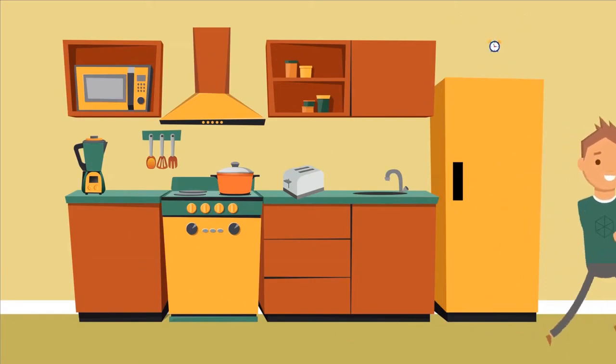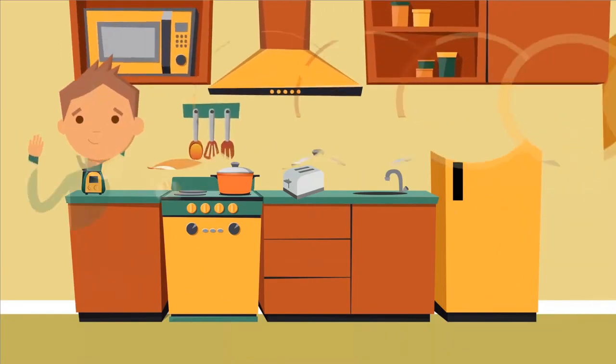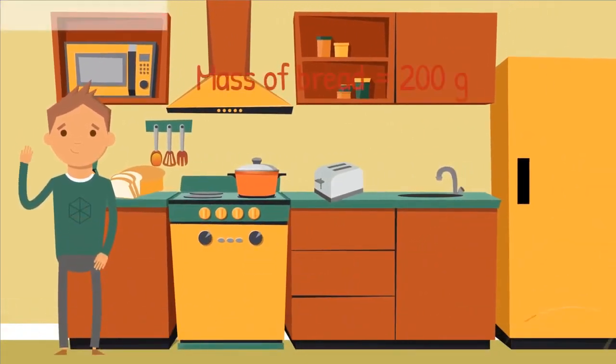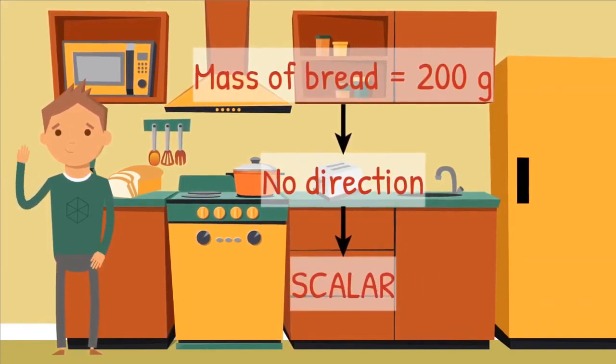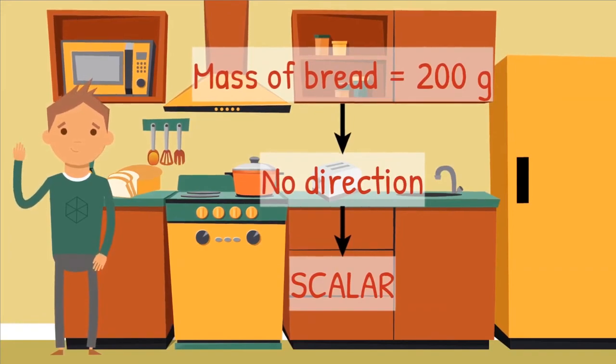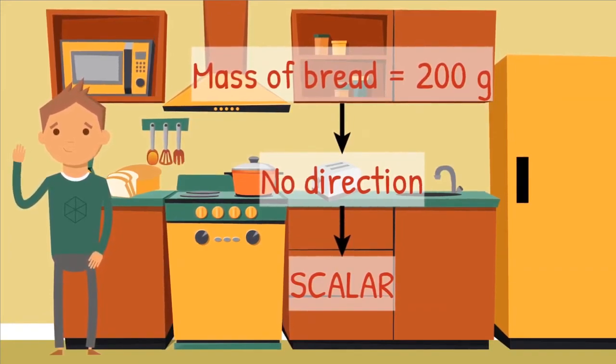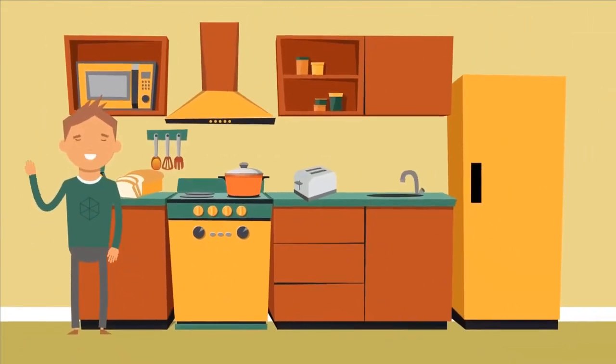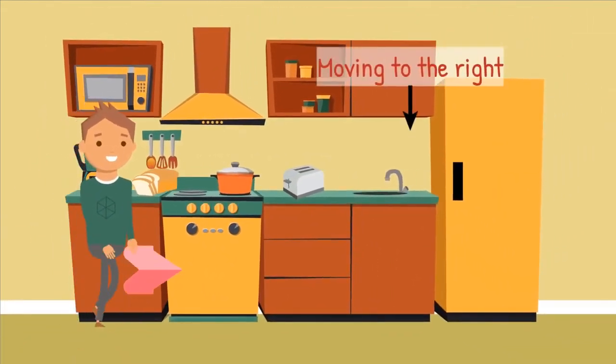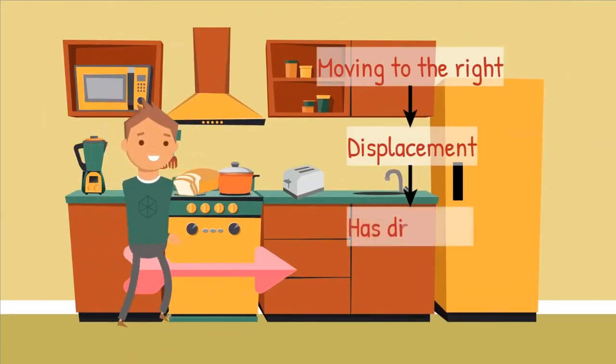First, the loaf of bread has 200 grams of mass. The mass has no direction, therefore it is a scalar quantity. Mike is moving to the right towards the toaster with his bread. This is displacement.